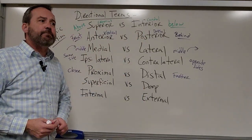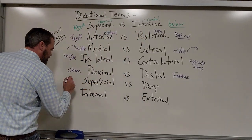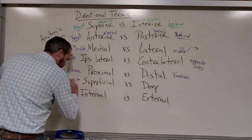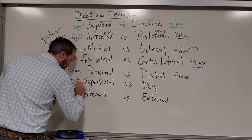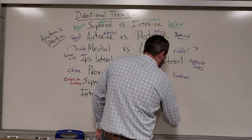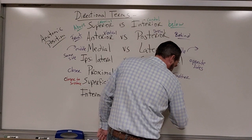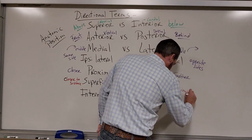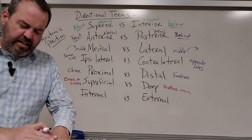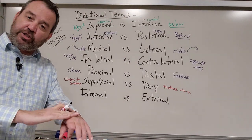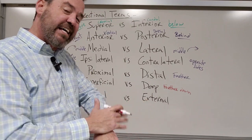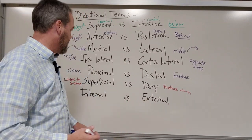Superficial versus deep. Superficial is just closer to the surface, where deep is farther down. That's pretty self-explanatory. My epidermis is the superficial layer of my skin because it is on the surface. The dermis is underneath that, so that is a deeper layer of skin.